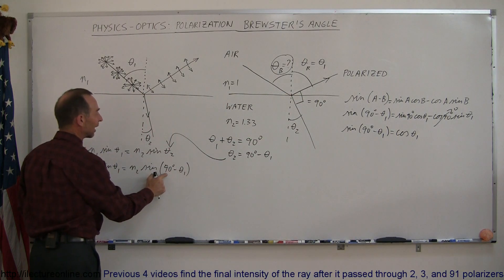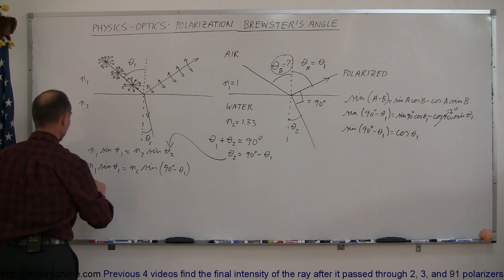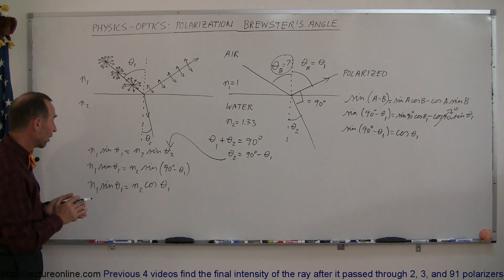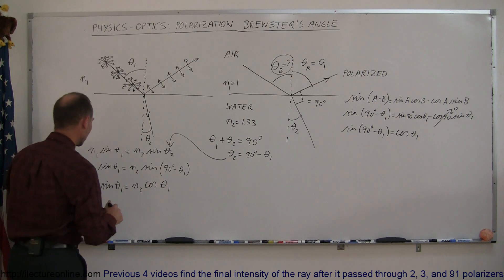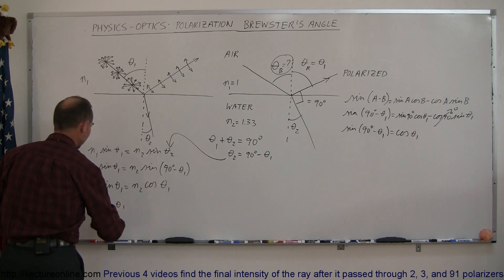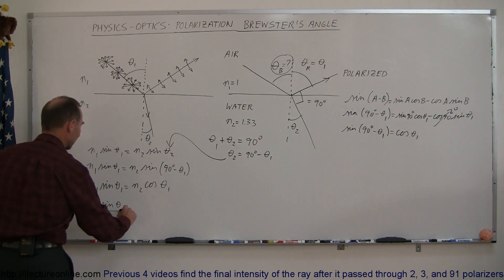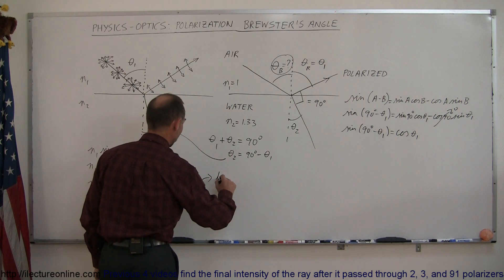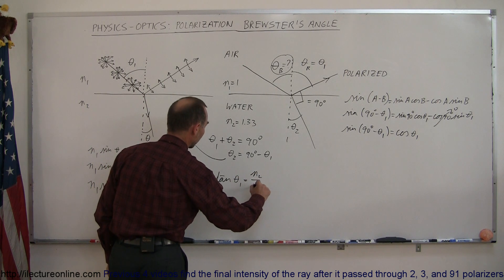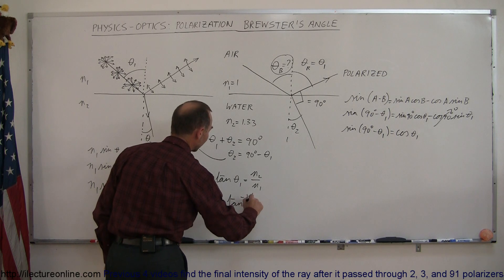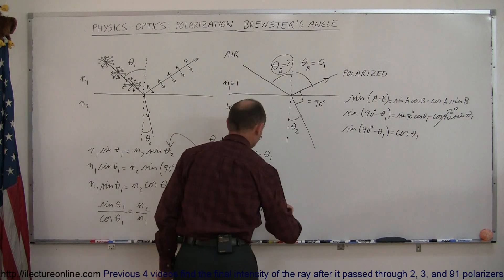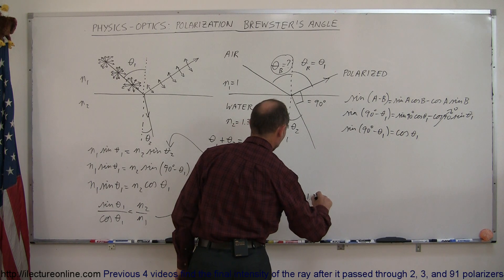In Snell's law, we can replace sine of (90° − θ1) with cosine of θ1, giving N1 sine θ1 = N2 cosine θ1. Dividing both sides by cosine θ1 and by N1, we get sine θ1 over cosine θ1 equals N2 over N1. Since sine over cosine equals tangent, tangent of theta sub 1 equals N2 over N1, which means theta sub 1 equals the arctangent of N2 over N1. In this case, N2 was 1.33 and N1 was 1, so this equals the arctangent of 1.33 over 1.